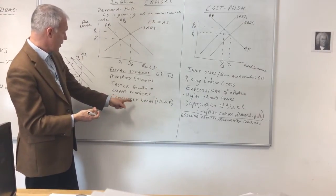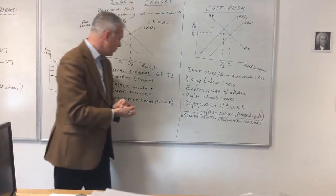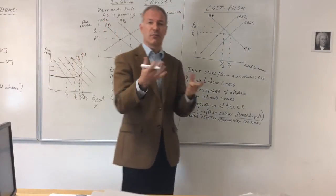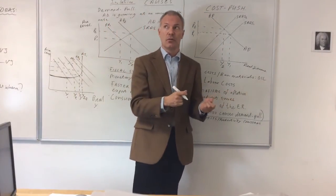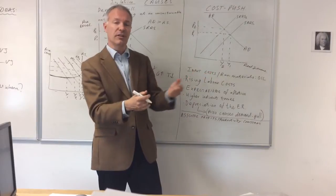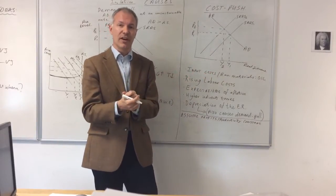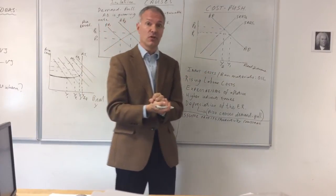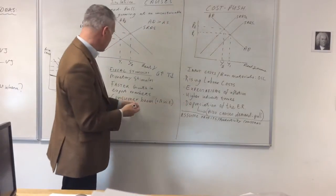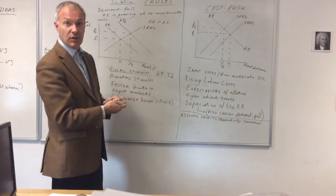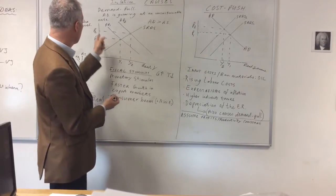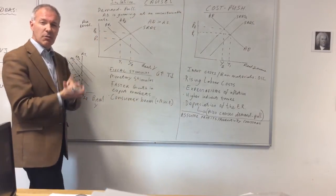Another explanation might be a consumer boom. If, for example, asset prices such as house prices or share prices increase significantly, you get a positive net wealth effect and of course an increase in consumer confidence. This leads to a significant increase in consumption and a rightward shift in aggregate demand and therefore inflation.